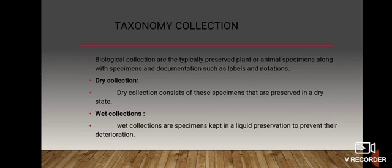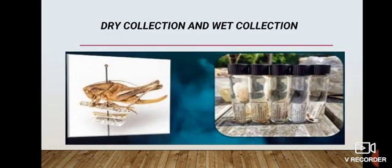Taxonomy collections are typically preserved plant or animal specimens along with documentation such as labels. Dry collections consist of specimens preserved in a dry state, while wet collections are specimens kept in a liquid preservation to prevent their deterioration.